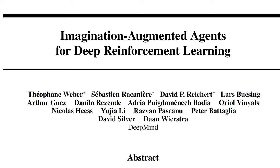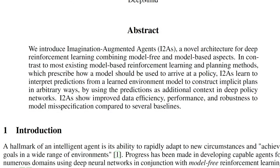Today we're taking a look at Imagination Augmented Agents for Deep Reinforcement Learning, a paper by DeepMind. Basically, they claim that agents who have a model of the world perform better than agents who don't. Since we usually don't have a model of the world, they make the agent learn a model of the world which can then be used to plan. This learning of the model can of course be imperfect, so they provide a way to work with imperfect environment models and combine them with a model-free approach.